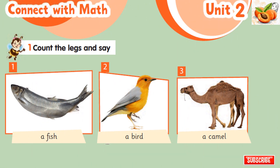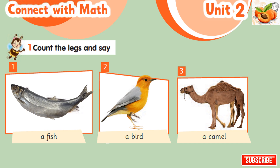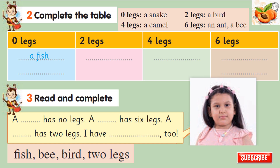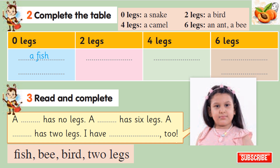Connect with math. Count the legs and say. 1. A fish has no legs. 2. A bird has two legs. 3. A camel has four legs. 4. An ant has six legs. 5. A snake has no legs. 6. A bee has six legs. Complete the table: Zero legs - a fish, a snake. Two legs - a bird. Four legs - a camel. Six legs - an ant, a bee.